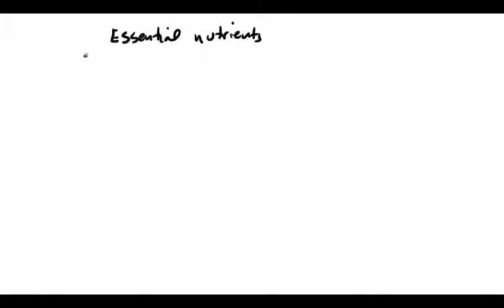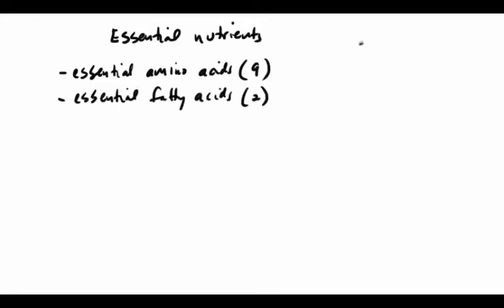So when it comes to essential nutrients, there are nine essential amino acids as well as two essential fatty acids. Now it's worthwhile to note here that there are no essential carbohydrates, even though carbohydrates typically represent the majority of our caloric intake. There are no carbohydrates that are absolutely needed for good health that we cannot make from scratch.